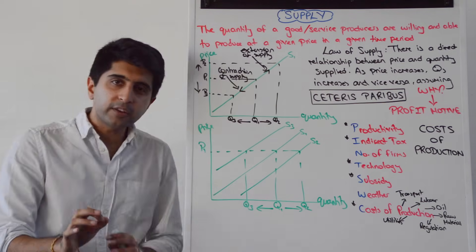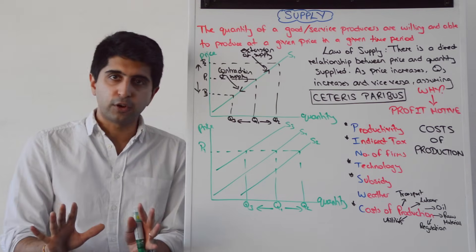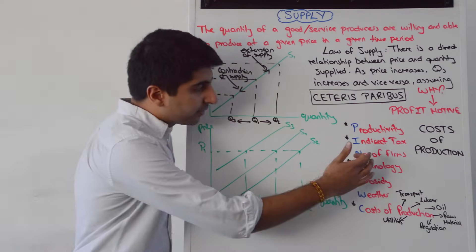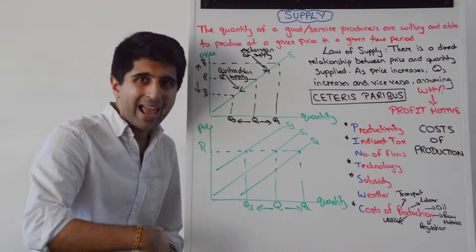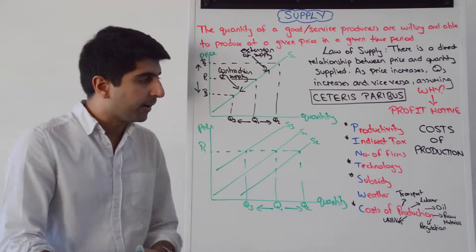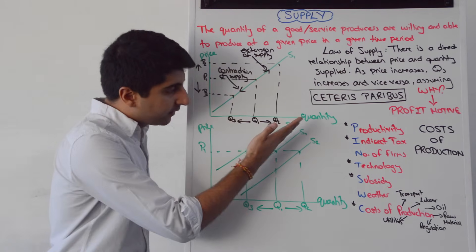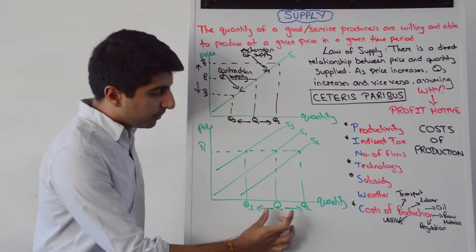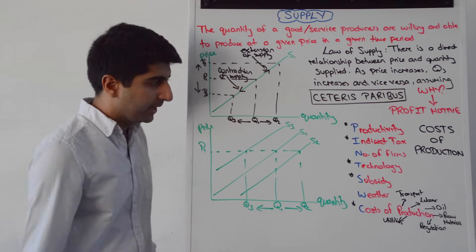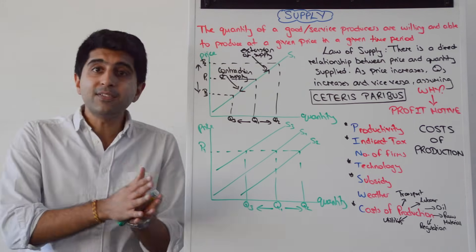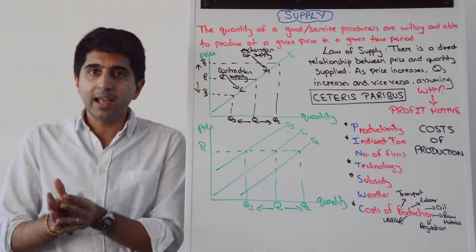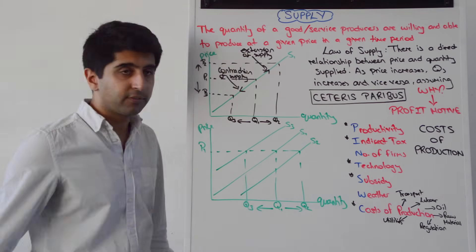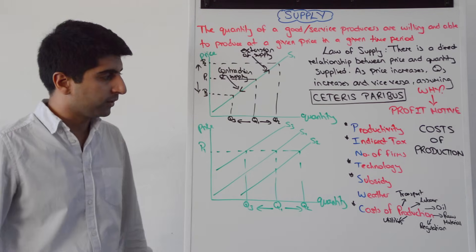N is the number of firms. This one doesn't have anything to do with costs of production — it's as simple as it sounds. The more firms that enter the market, the supply curve shifts to the right from S1 to S2, as there'll be more supply in the market. Whereas if firms leave the market, the supply curve shifts to the left from S1 to S3.